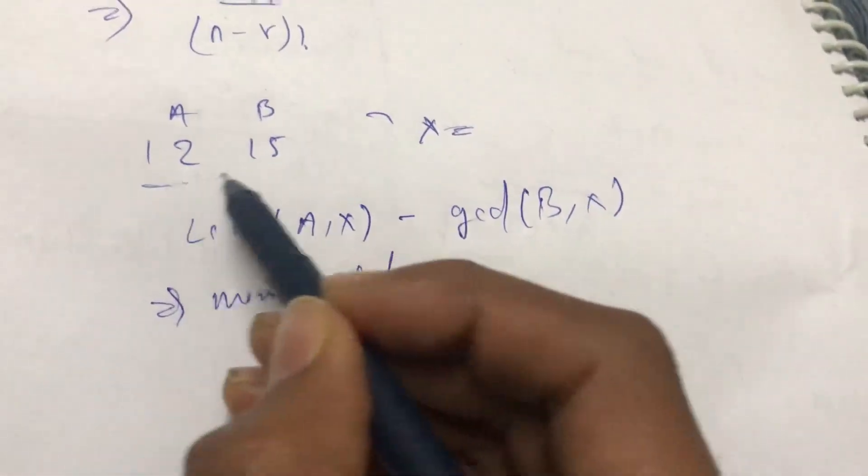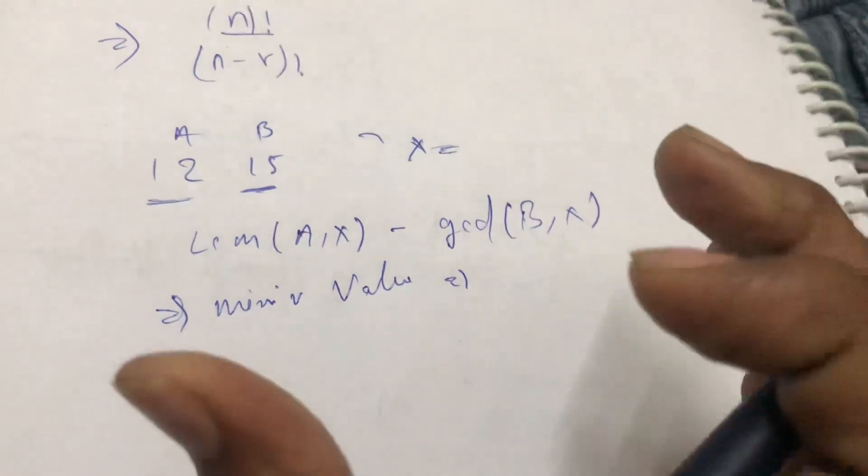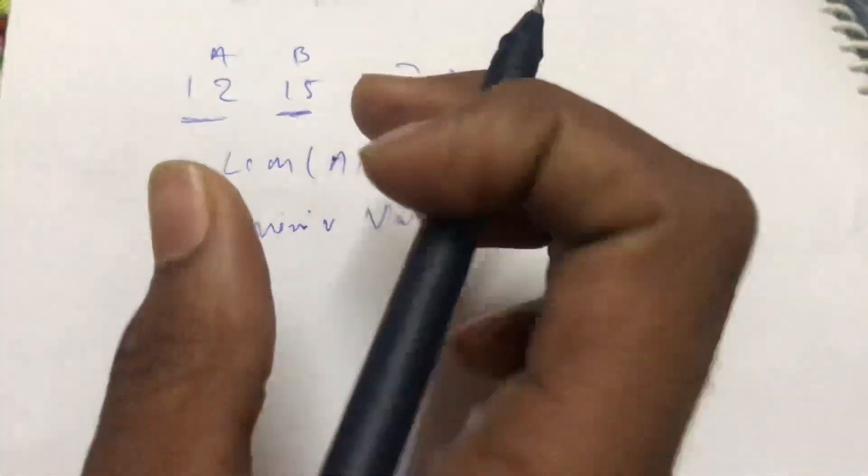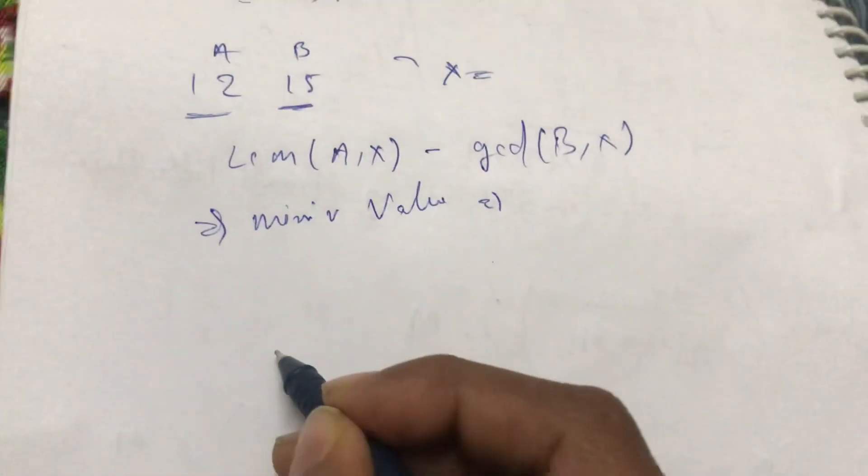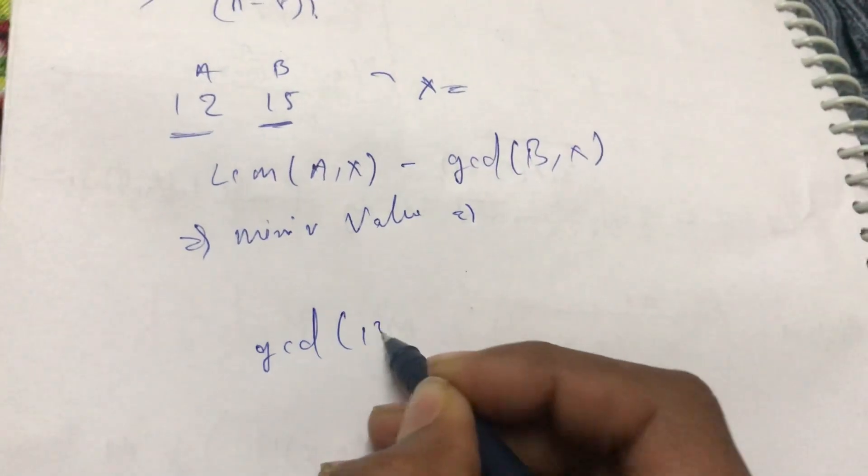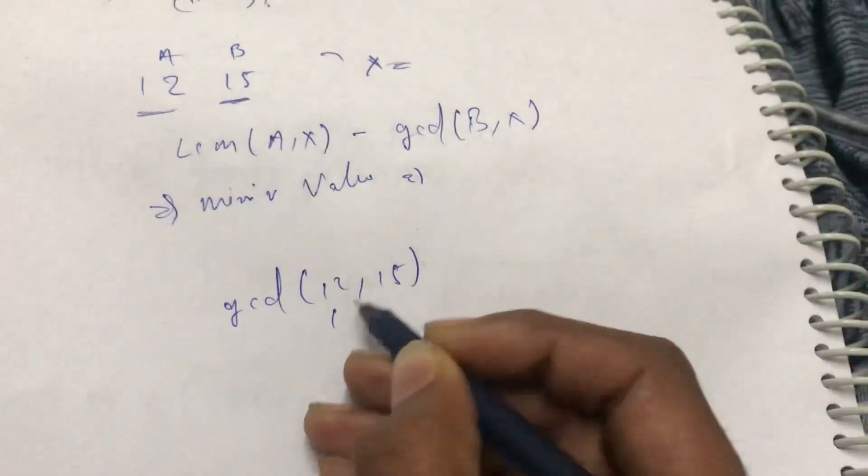According to some observation, we can just see that if we GCD these two numbers, we're going to be getting the greatest common divisor.